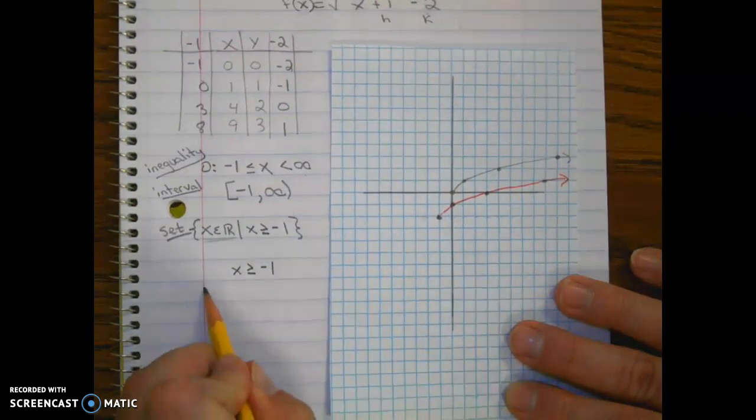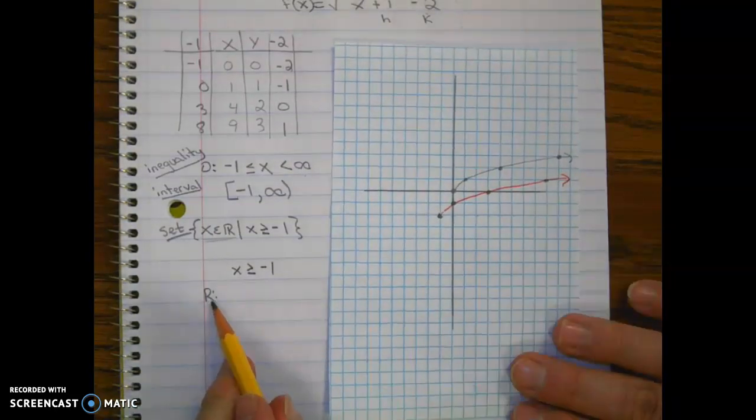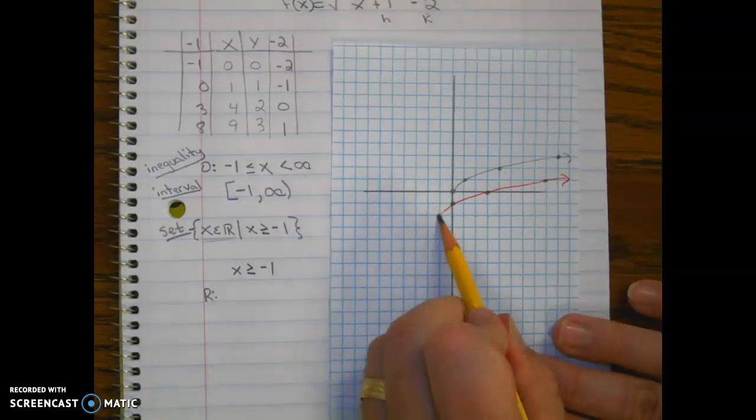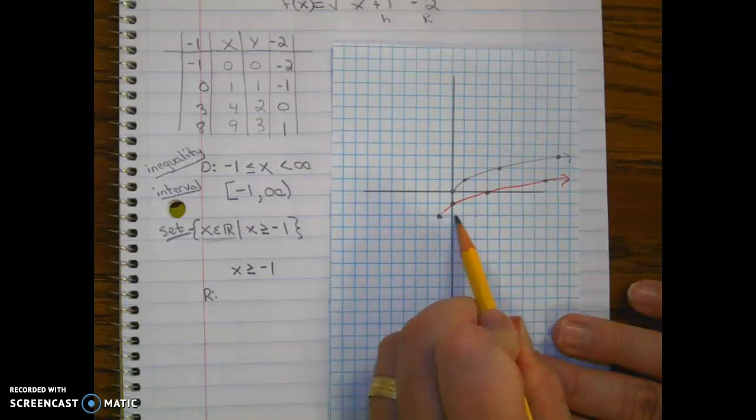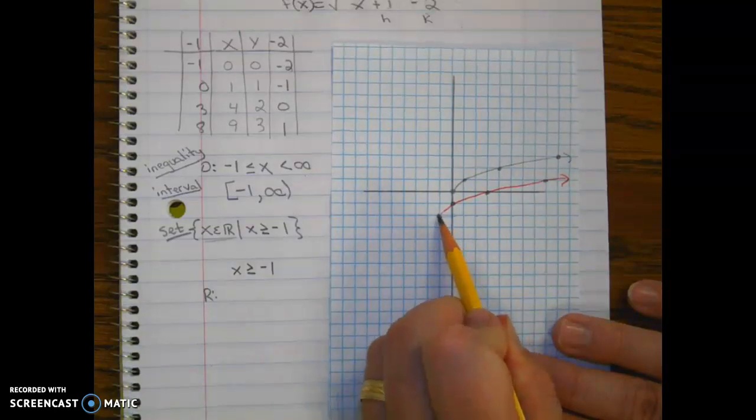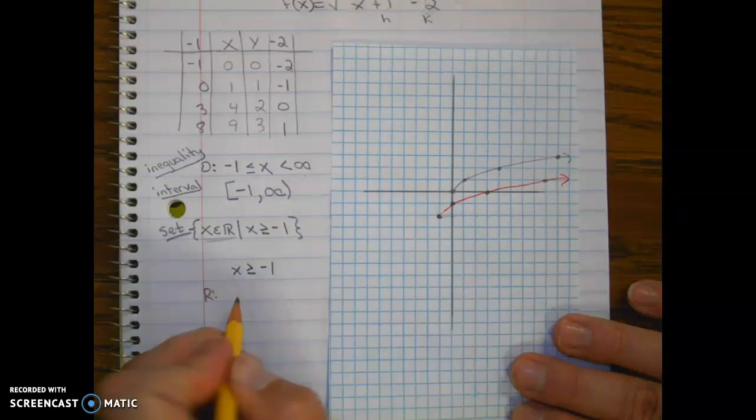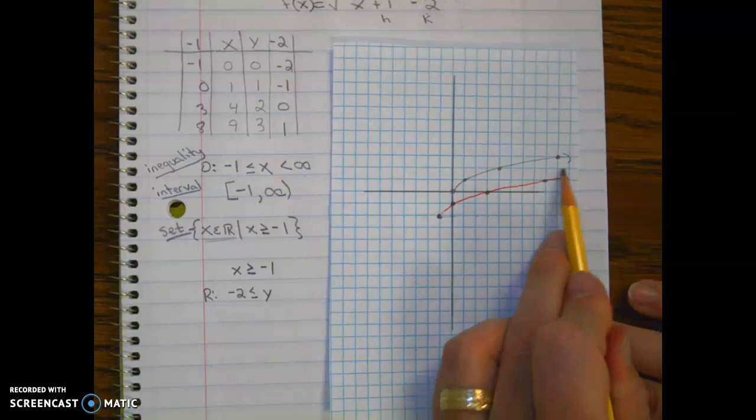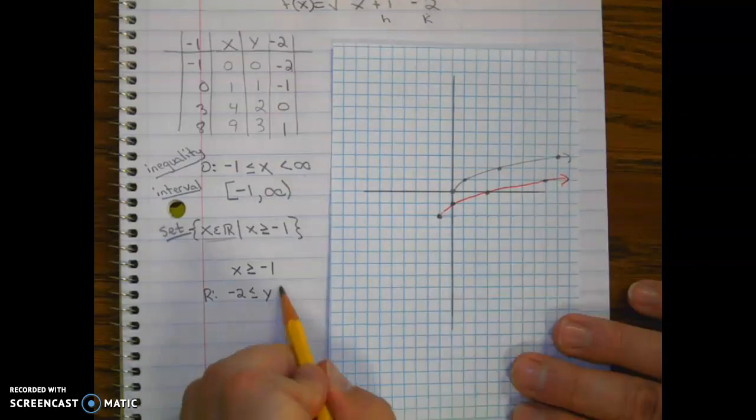So for the range, remember range goes from lowest to highest. So on the low end we're going through negative two, this dot, this point negative two. And on the high end, again the arrow, so through infinity.